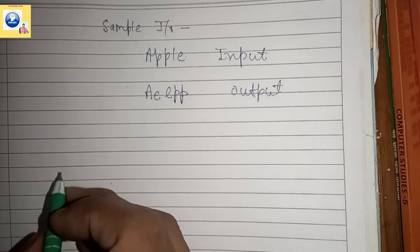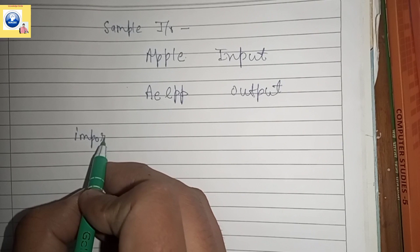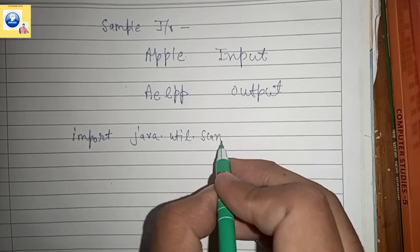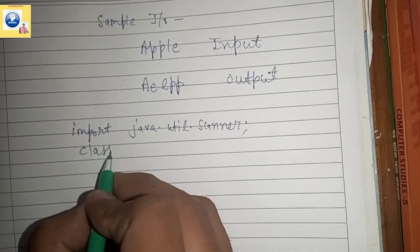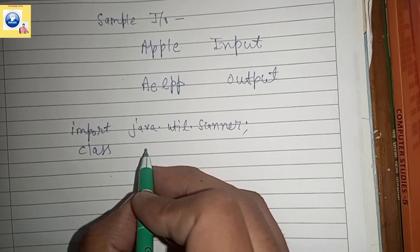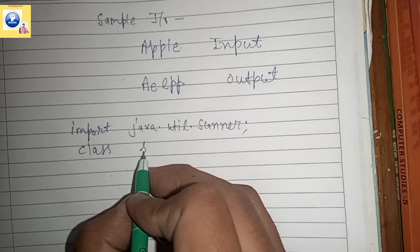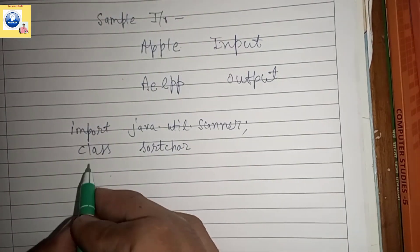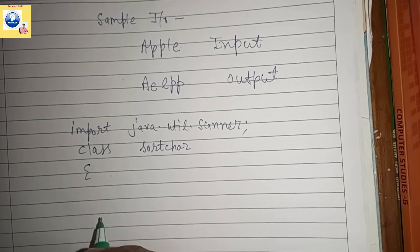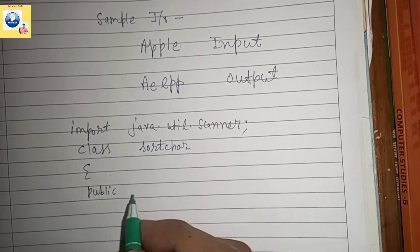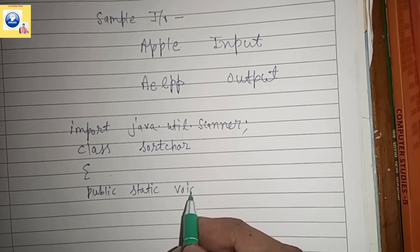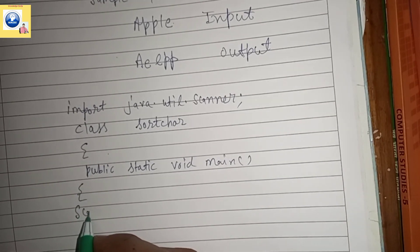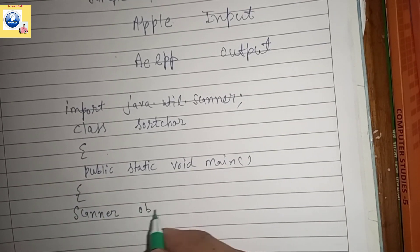Let's begin the program. The first line will be 'import java.util.Scanner'. Then we create a class - I'm giving it the name 'SortCat', any name can be given as long as it is not a keyword. Then we write 'public static void main', which is the main function of the program.